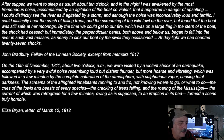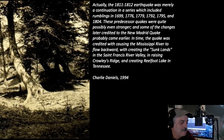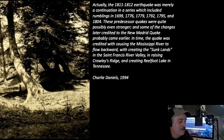An account by Charlie Daniels — not the musician but the Secretary of State of Arkansas — noted that the 1811-1812 earthquake was merely a continuation of a series including rumblings from 1699, 1776, 1779, 1792, 1795, and 1804. He wrote that the quake was credited with causing the Mississippi River to flow backward, creating the Sunk Lands in the St. Francis River Valley, raising Crowley's Ridge through southeastern Missouri, and creating Reelfoot Lake in Tennessee and Kentucky.